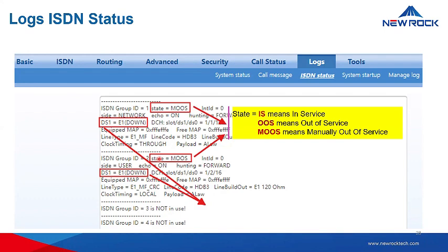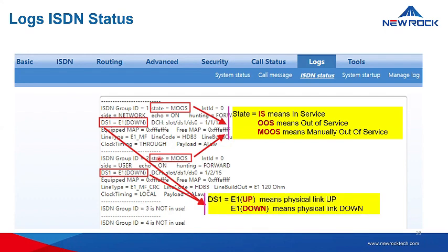If there is OOS or MOS, it indicates that the physical link layer negotiation has failed. Some issues may need to be corrected, such as configuration issues with the 120 ohm balance line. With regards to the physical link, if it is up, the physical link layer is up; if down, it is down.